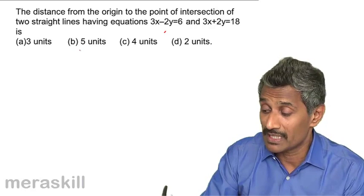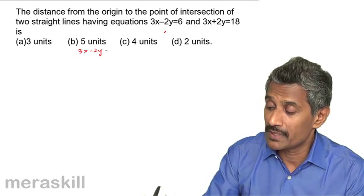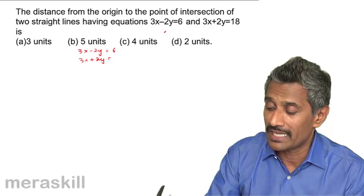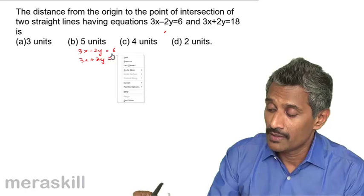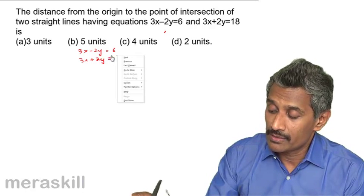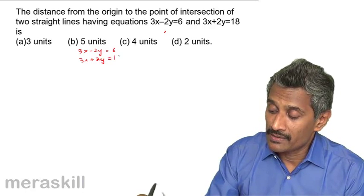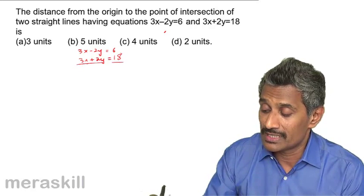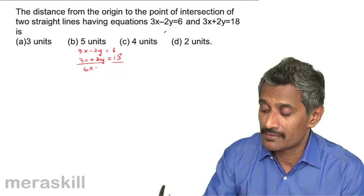We solve them simultaneously. 3x minus 2y equals 6, and 3x plus 2y equals 18. We can eliminate by adding. When you add the two, the y terms cancel and you get 6x equals 24.